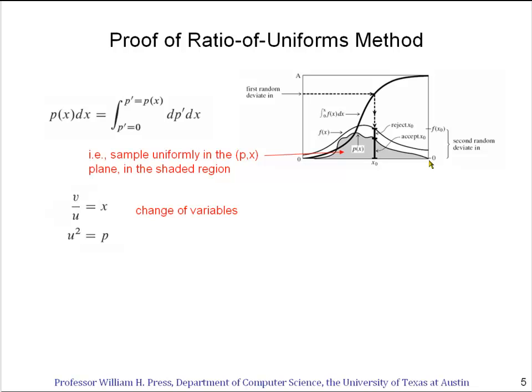Now, what's the trick? Watch closely. We're going to just make a change of variables in the p' x plane. So I'm going to just pick these out of thin air. I'm not sure how somebody discovered this in the first place, but it's easy to check. Let's define v/u equals x, no surprise, because we saw that before in the formula, and u² equals p. And now, how do I write this integral in terms of u and v instead of p and x?